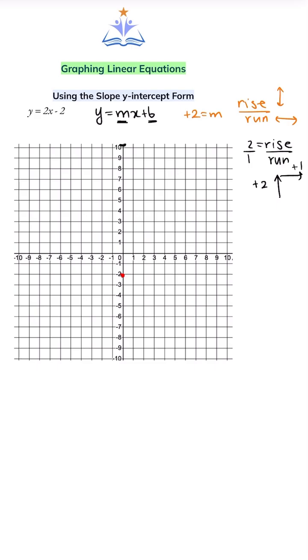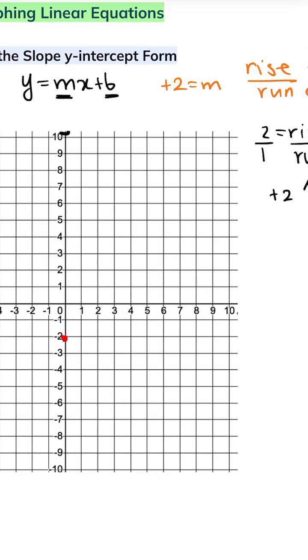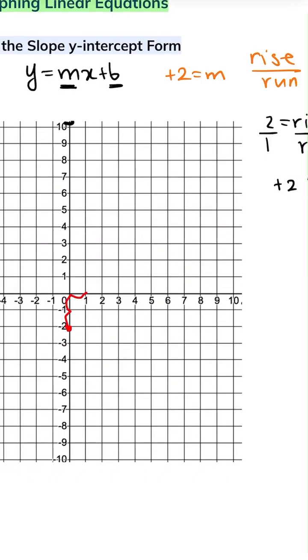Using this, we can find the next point on our line by going 2 units up and 1 unit right. Again, 2 units up and 1 unit right. Using this, we can find the rest of the points on the line.